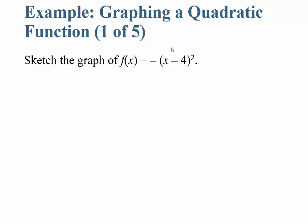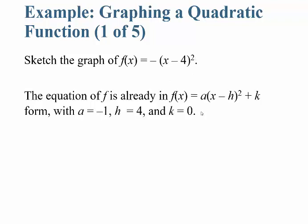Let's sketch the graph of f of x equals negative (x minus 4) squared. The equation is already in standard vertex form. My value of a is negative one, my value of h is 4 (from minus 4), and k is zero since there's no added constant.